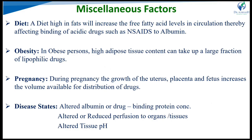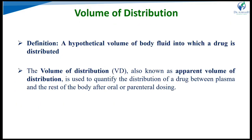Pathophysiological conditions during disease also alter distribution: albumin concentration or drug-binding protein concentration may change, perfusion rate may be reduced, and tissue pH may be altered — affecting the degree of ionization and thus the distribution pattern.